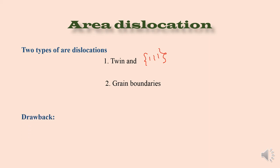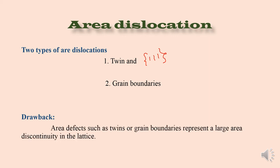The main drawback of the area defect is, area defects such as twin or grain boundary represent a large area discontinuity in the lattice structure. That means, the crystal on either side of the discontinuity may be otherwise perfect.